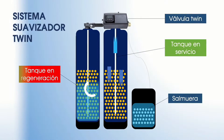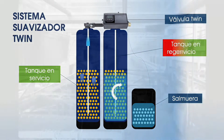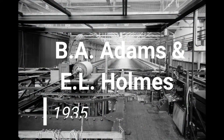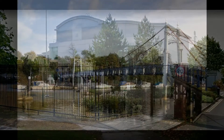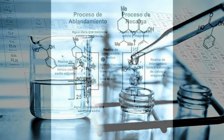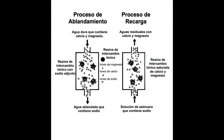Who discovered ion exchange resin? In 1935, two chemists, Adams and Holmes, at the National Chemical Laboratory in Teddington, United Kingdom, synthesized the first ion exchange resin — a phenolic resin. In the 1940s, strong base anion resin was born, which made complete demineralization possible for the first time.